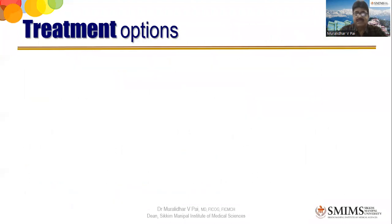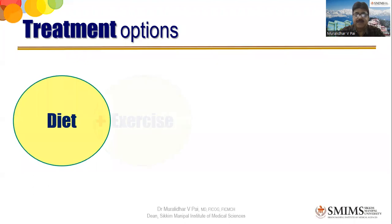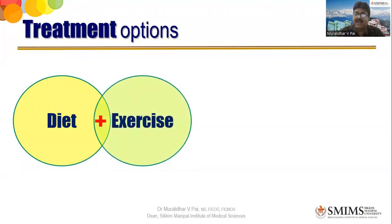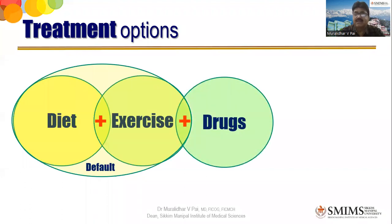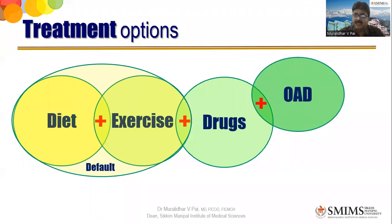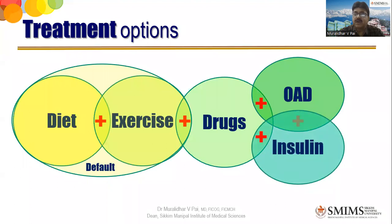Now let me talk about glycemic control in pregnancy. The usual treatment options are: first, diet; second, exercise — and diet plus exercise is a default, meaning there is no need to ask whether to prescribe them. Diet and exercise are a must, and in addition to this you may give other things. To these we add drugs, which could be oral anti-diabetic agents, insulin, or a combination.